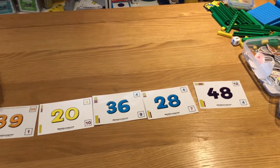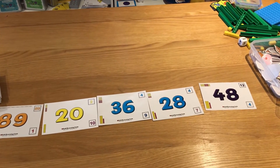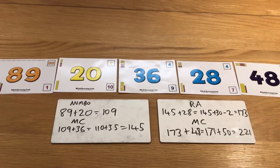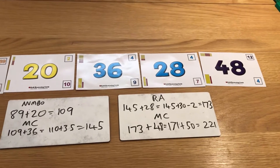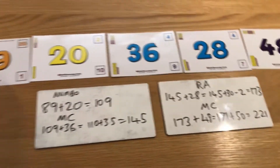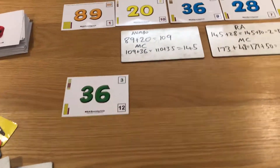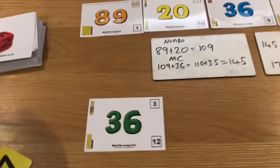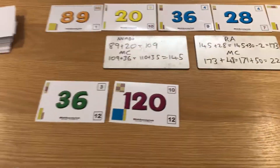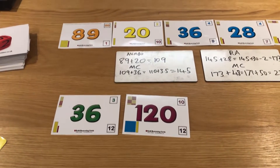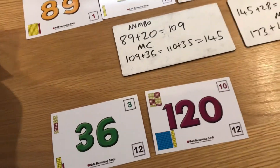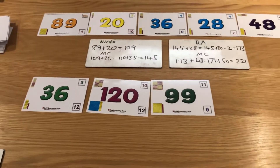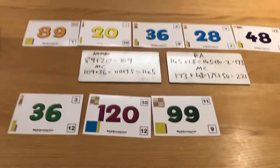173 and 48 — pass two over: 171 plus 50 is 221. After five cards I'm on 221. Strategies so far: manipulate the calculation, round and adjust, manipulate the calculation again. Next card: partition 221 add 36 is 257. Then another partition: 257 add 120 is 377. Next card: round and adjust — add 100 is 477, subtract one is 476.